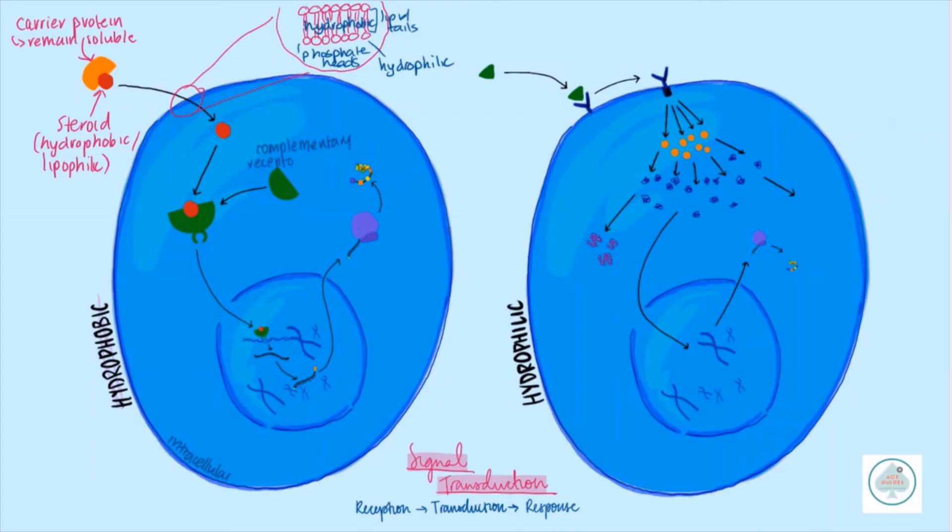When we're talking about receptors or proteins in general, the complementary nature of them is going to be that tertiary/quaternary structure. That's the part of the protein that is going to attach to the molecule, and it has to have its amino acid R groups in an arrangement that is complementary to the size, shape, and charge of this messenger. So we then get here our ligand-receptor complex.